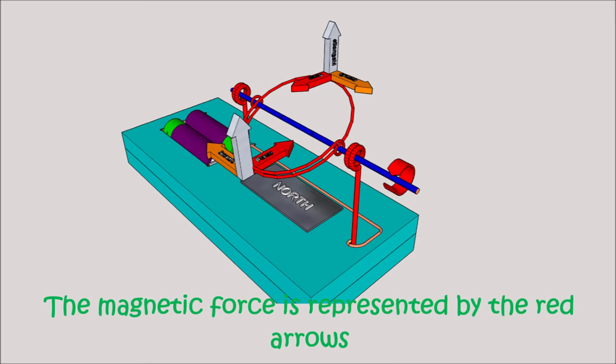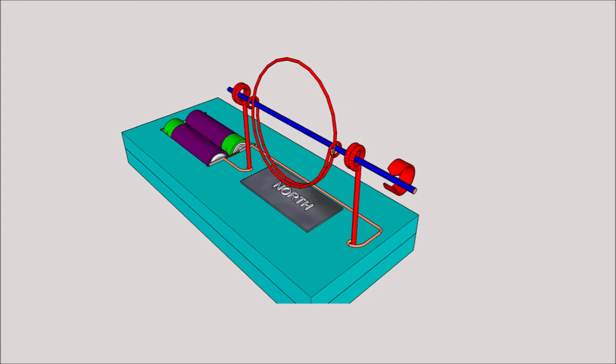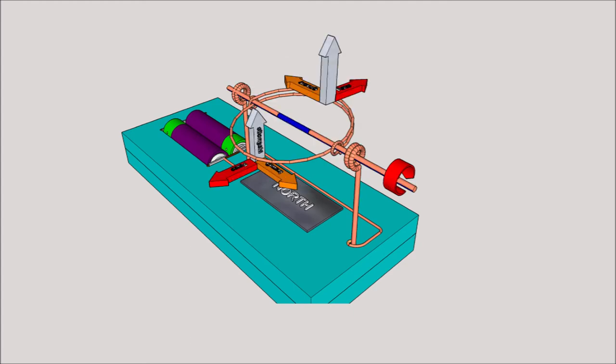When the coil flips around, if electricity were maintained, the current would be in the opposite direction and the rotation direction of the coil would be reversed.